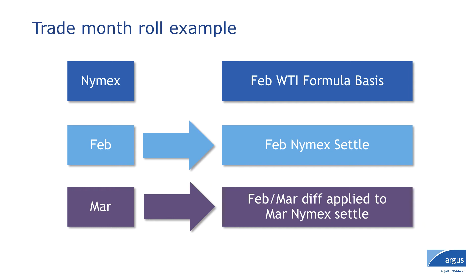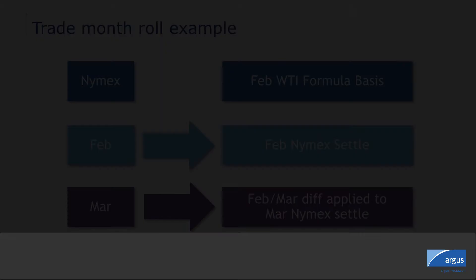This cash roll is actively traded in these last three days. So adding the cash roll to the March NYMEX futures contract gives us the Argus WTI formula basis for the last three trading days for February delivery.